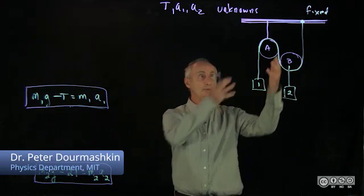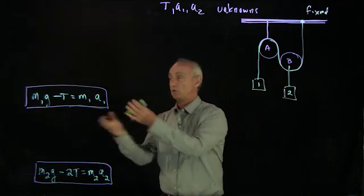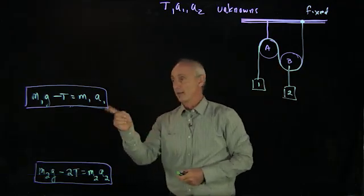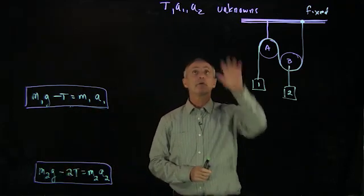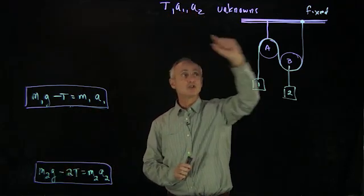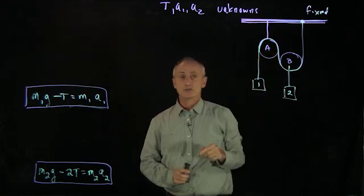When we analyzed Newton's second law applied to this compound system, we had two equations for M1, object 1, and object 2. What we found is that we had three unknowns: the tension in the string and the accelerations of the two objects.